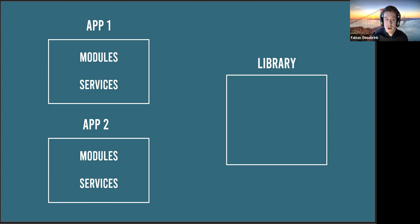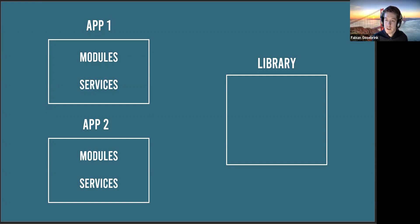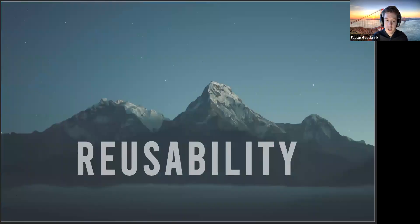If you want to share a service with other applications and build distributed knowledge at a separate point, you can use libraries. Inside that library there can be modules, services, components - everything you want to share - and from that library you can share that logic to specific apps. They can consume the logic you encapsulated. The first answer to why we do libraries is reusability - you write it once and use it from different points.